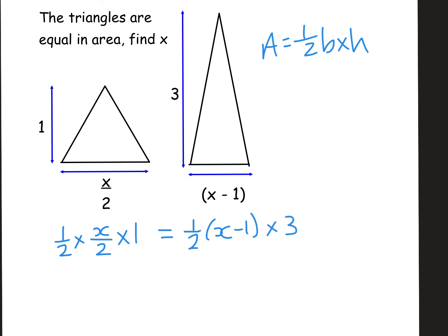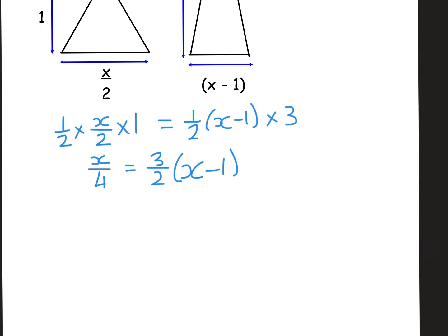Now I've just written it out. That doesn't look very pretty, does it? Okay, let's tidy this up a bit. So, a half times x over 2 times the top numbers times the bottom numbers. That will just give us x over 4. The times 1 won't do anything. So this becomes x over 4 equals, I'm going to bring that 3 to the front, and that will become 3 over 2 bracket x minus 1. So I've tidied up my two expressions for my areas.